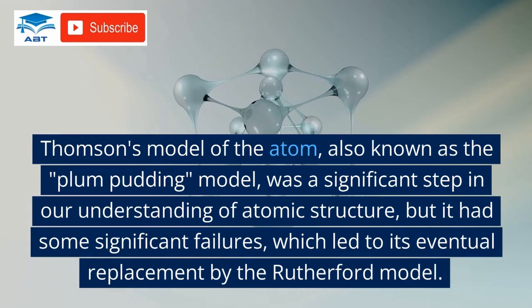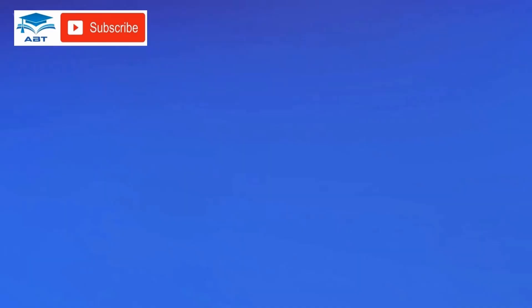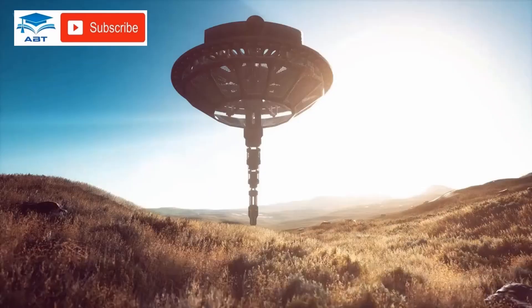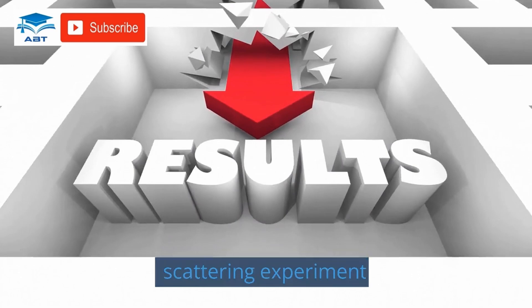Thompson's model of the atom, also known as the Plum Pudding model, was a significant step in our understanding of atomic structure, but it had some significant failures which led to its eventual replacement by the Rutherford model. It failed to explain the stability of the atom, failed to account for the existence of isotopes, and failed to explain the results of the alpha particle scattering experiment.